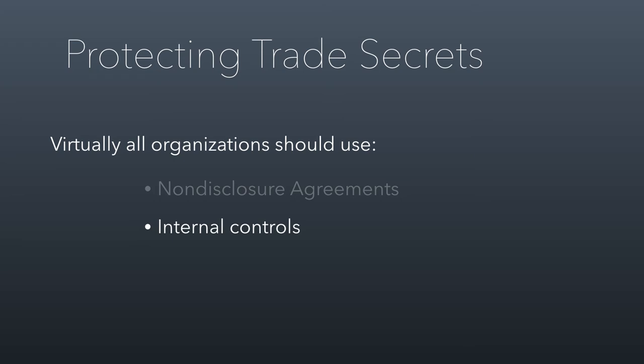Make sure you have internal controls in place — locked file cabinets, password-protected files, that sort of thing. And you actually have to sue. If somebody violates your trade secrets and you let them off the hook, and then the next person violates the same trade secret, you won't be able to protect it anymore. Once a trade secret has been made public through means not challenged by the owner, that information is no longer protected. You have to stay on top of violations legally, or you'll lose protection.